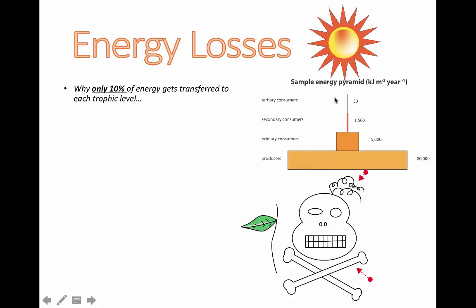So where does the energy go if only 10% makes it up? That means 90% disappears. It's like a really poorly designed car where gasoline gets burned but only 10% is actually used to make the car do anything and the other 90% gets lost. You've probably heard of heat loss as one of the main sources, but we want to be more specific.